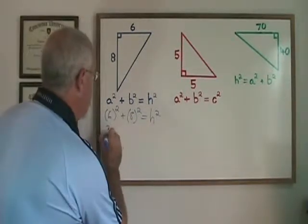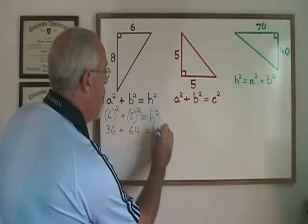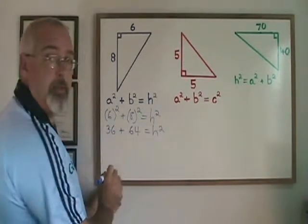6 squared is 36. 8 squared is 64. 36 plus 64 is 100.